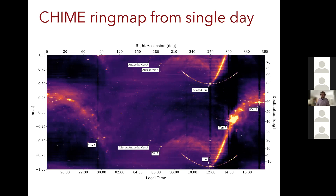Another notable feature is an aliasing structure: a copy of the Sun's emission appears elsewhere in the map because at these frequencies the shortest CHIME baseline is a bit too long to uniquely localize emission in the north-south direction instantaneously. This aliasing can be resolved by stitching time samples together using different fringe rates. Because CHIME sees over the pole, one also sees antipodal observations of sources like Cas A.